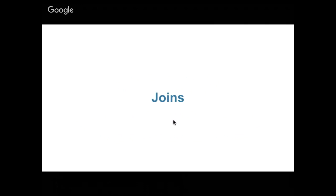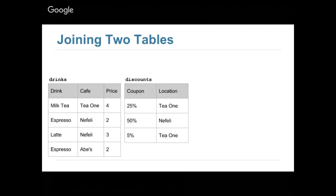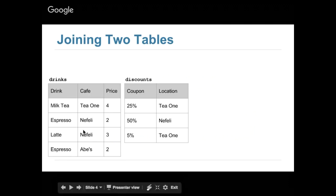It's not as complicated as the other methods we talked about today, hopefully. So let's suppose I have two tables. I like to get drinks around the north side of this area. I recommend it — the food and drinks here are quite good. In particular, I like to get milk tea from T1, which is unfortunately closed over the summer, and espresso from Abe's.